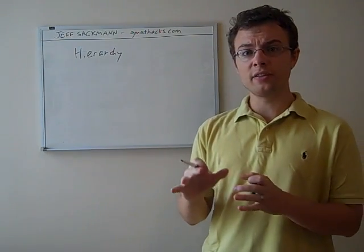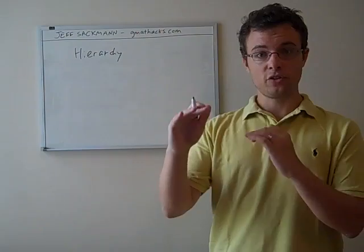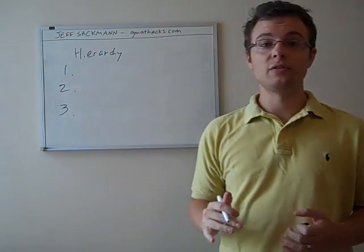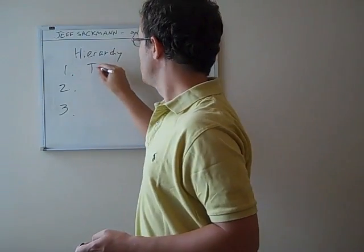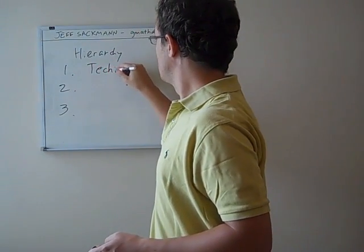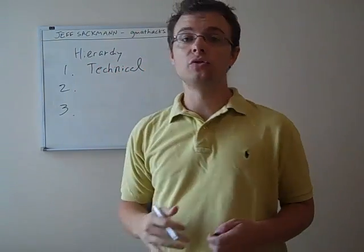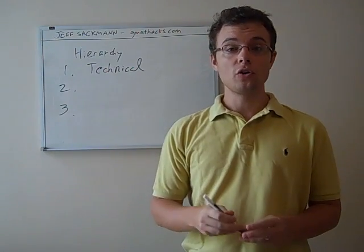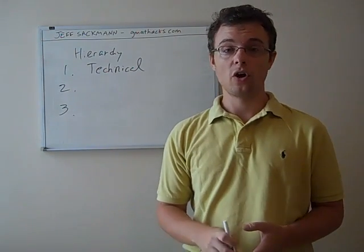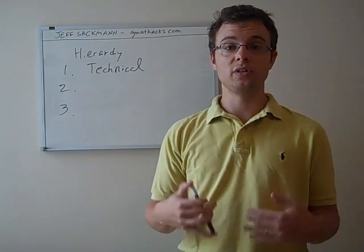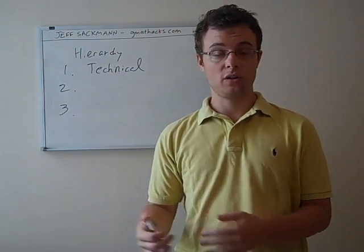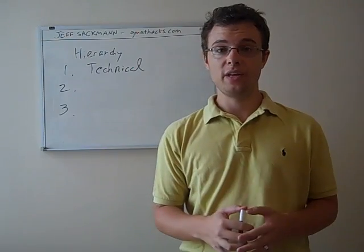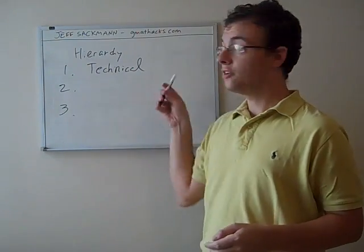So I'm going to divide the three types of errors into three levels of the hierarchy. The first level is what I call technical errors, and these are the things that we usually associate with old-fashioned grammar. Are you using the correct verb tense? Are you using the correct pronoun? Are you using it to refer to a singular and them to refer to a plural? Are you putting your modifiers in the right place? These are technical grammatical errors.